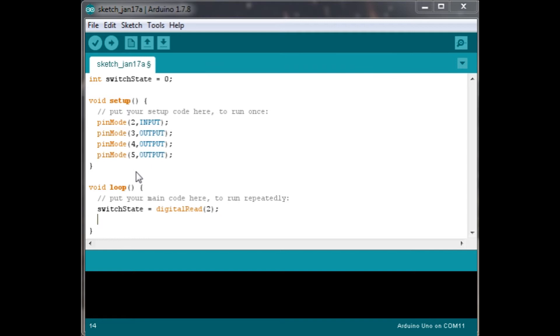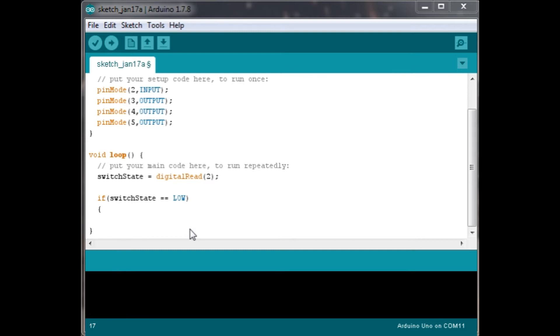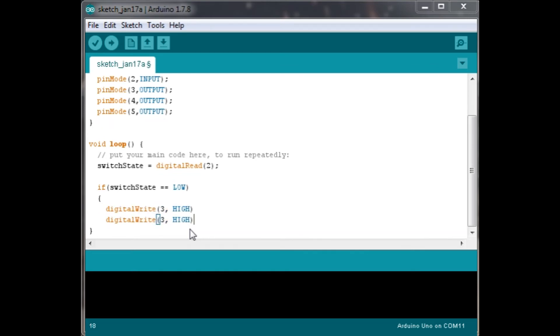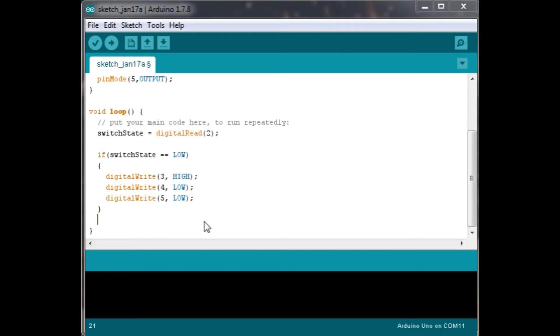We've got those four there, and then we're going into the loop itself. Our switch state is going to equal digital read 2. Then we're going to have an if switch state, and if the switch state is equal to low, that means the button is not pressed. Then we are going to digital write 3, 4 and 5 high, low and low. We need to end each one with a semicolon. So that's high, low, low.